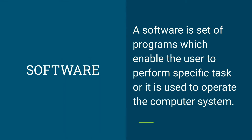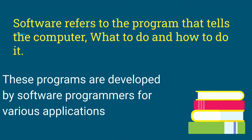Software will act as an interface between the user and the hardware. We are the user, and the hardware is working according to our instructions. So this is the two-way interface. Software refers to the program that tells the computer what to do and how to do it — we have instructions for the computer.